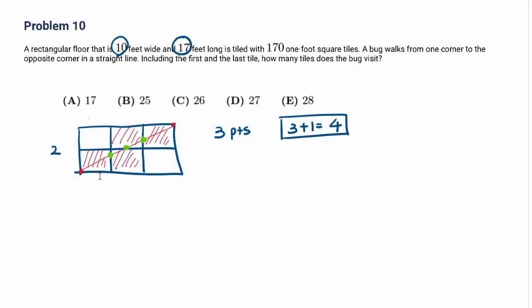This is case 1. Case 2, take a 2 by 4. They are both even numbers. When you make a diagonal, we have this point, which is a lattice point.